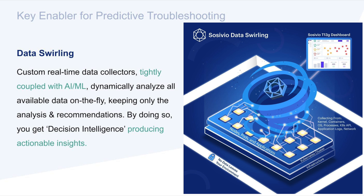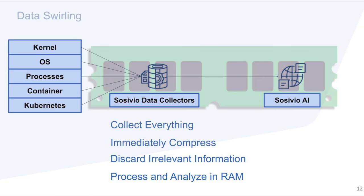Data swirling is our novel approach in which we use custom data collectors along with lean artificial intelligence and machine learning to collect and analyze data on the fly. By having data that is analyzed in real time, we can provide actionable insights and be predictive about events in your Kubernetes cluster. Data swirling starts with collecting good quality data. Sasevio recognized the current challenges with today's data collectors and opted to build our own custom data collectors, optimized to collect very granular metrics and information from the entire infrastructure stack, ensuring Kubernetes troubleshooting starts with good quality data.